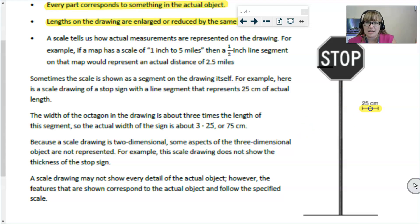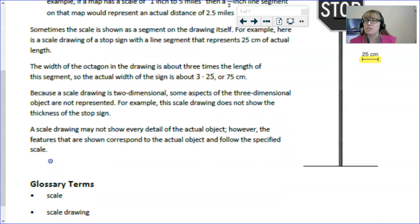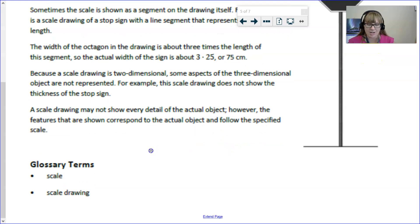We can see that in this drawing of the stop sign where we are given this measurement right here. That amount represents 25 centimeters. So then we would have to stack it on top again and again in order to get to that full stop sign to see how tall it actually is. We could also do that with the width of the octagon and see that it is about three of those, three times 25 or 75 centimeters. Do remember that because scale drawings are two dimensional, some aspects of three dimensional objects are not going to be shown. We also need to be aware that a scale drawing may not show every detail of the actual object. However, the features that are shown do correspond to the actual object and they follow that specified scale.